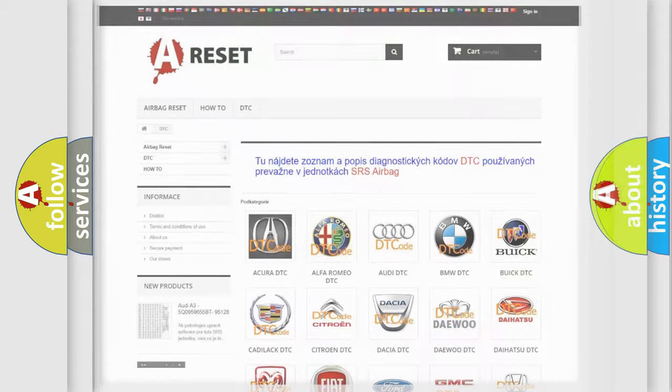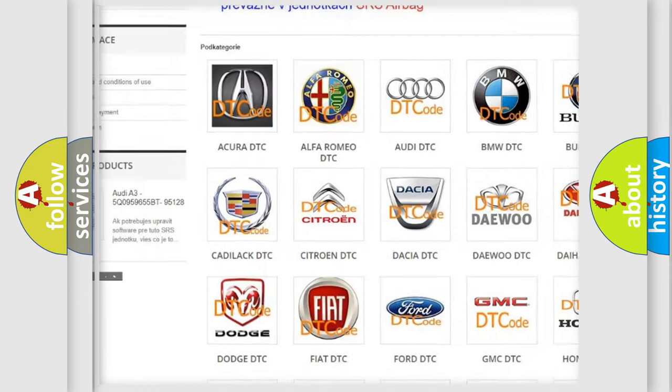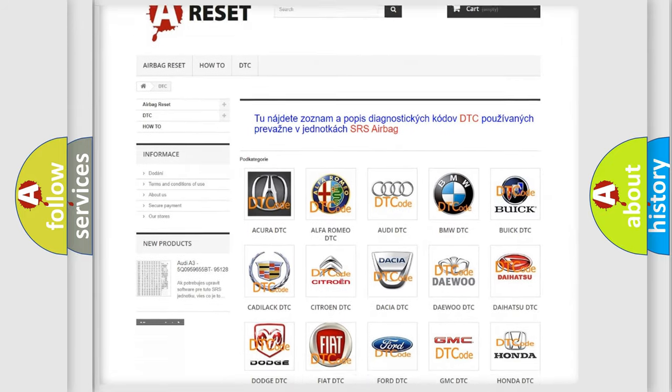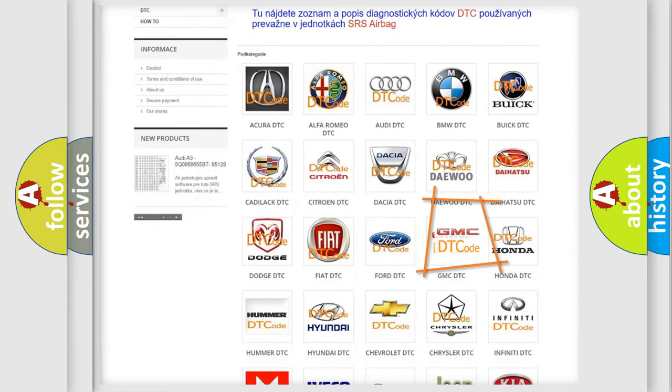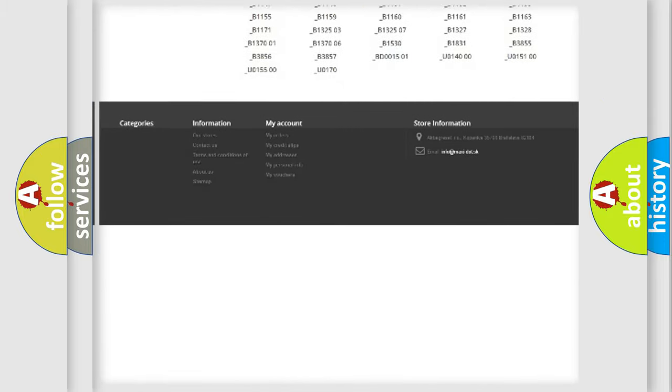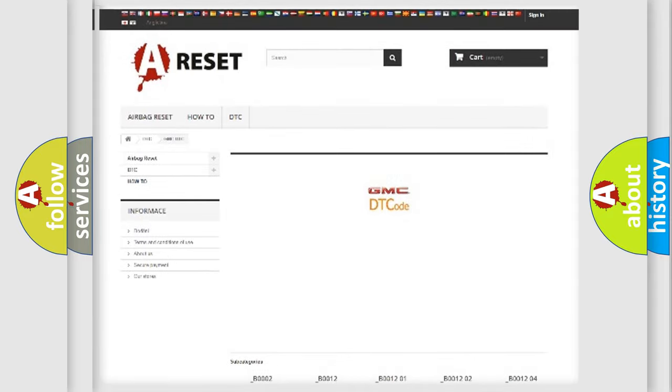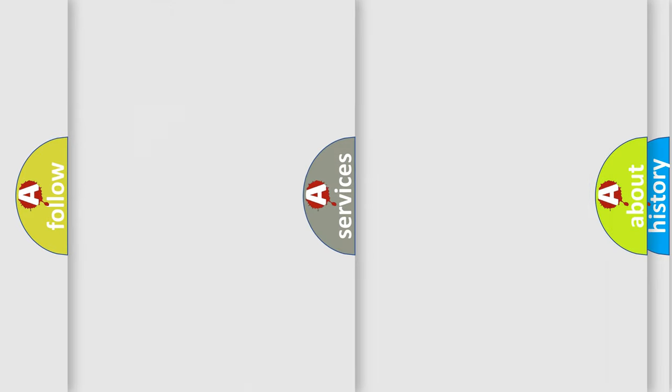Our website airbagreset.sk produces useful videos for you. You do not have to go through the OBD2 protocol anymore to know how to troubleshoot any car breakdown. You will find all the diagnostic codes that can be diagnosed in GMC vehicles, and also many other useful things.